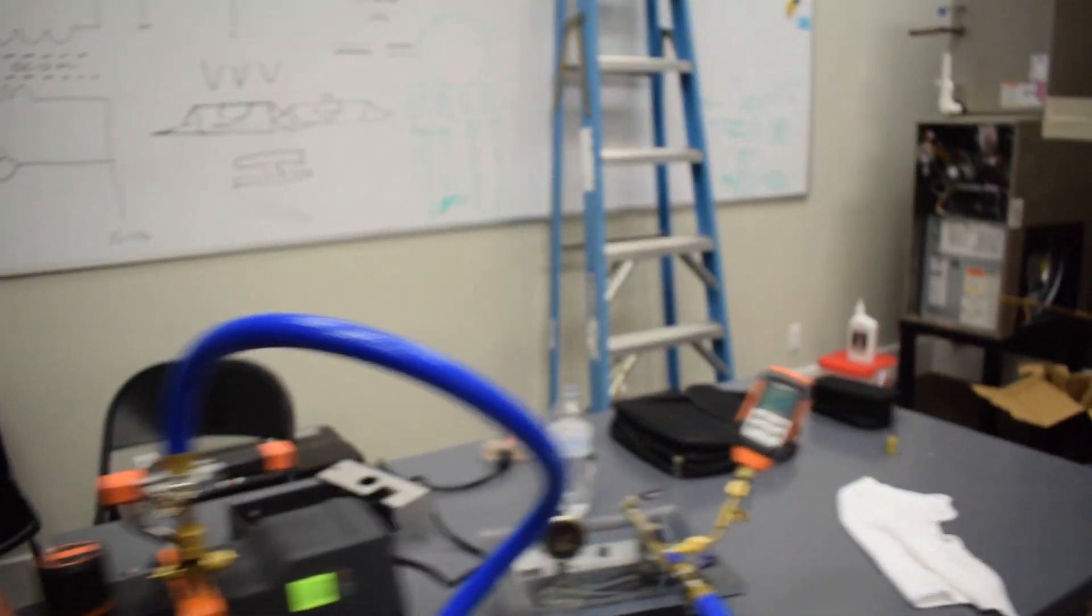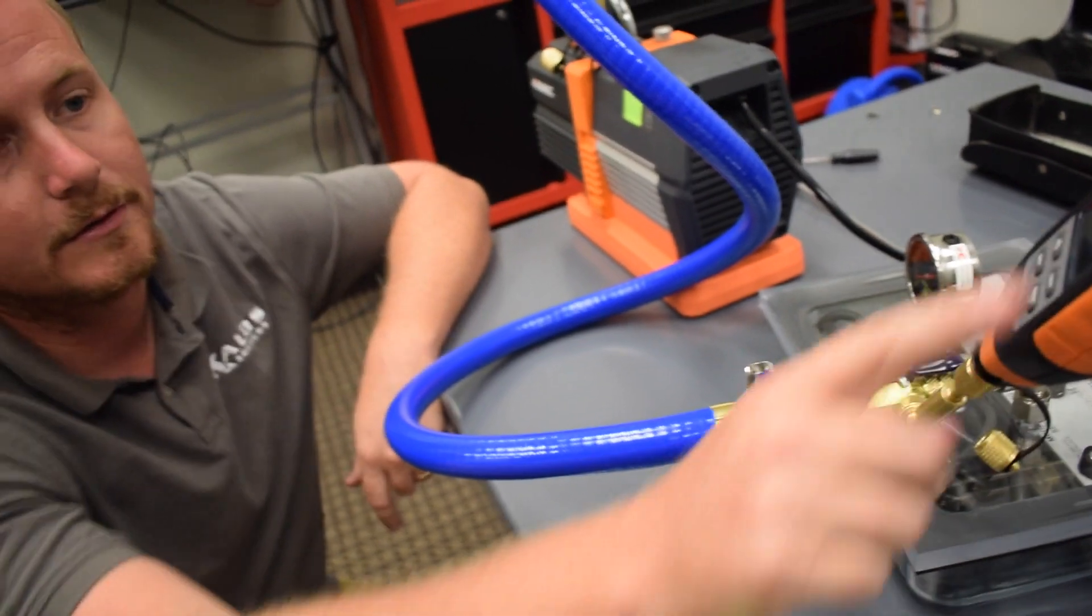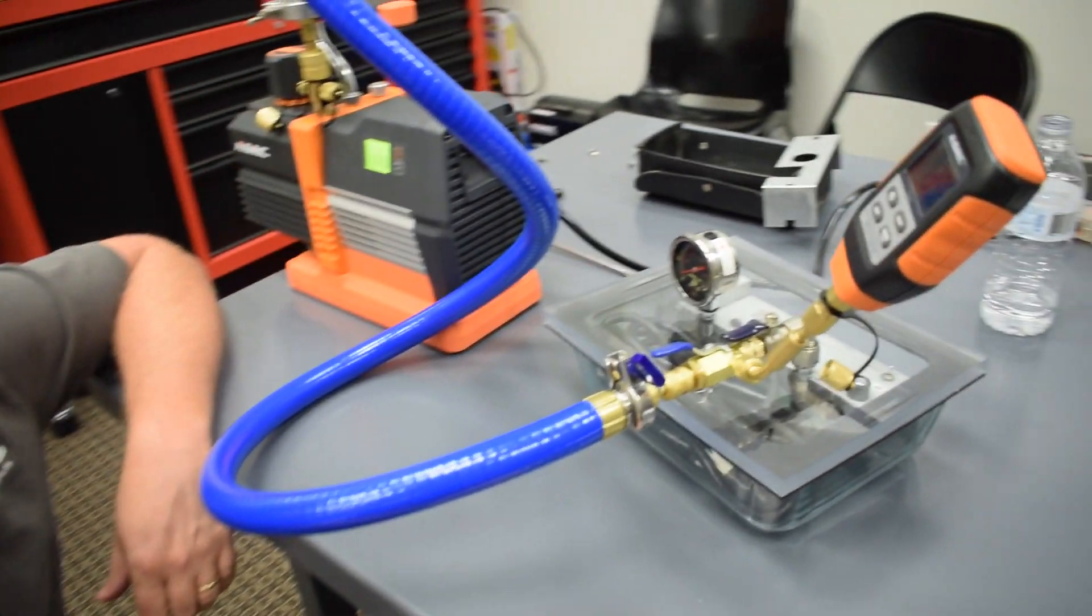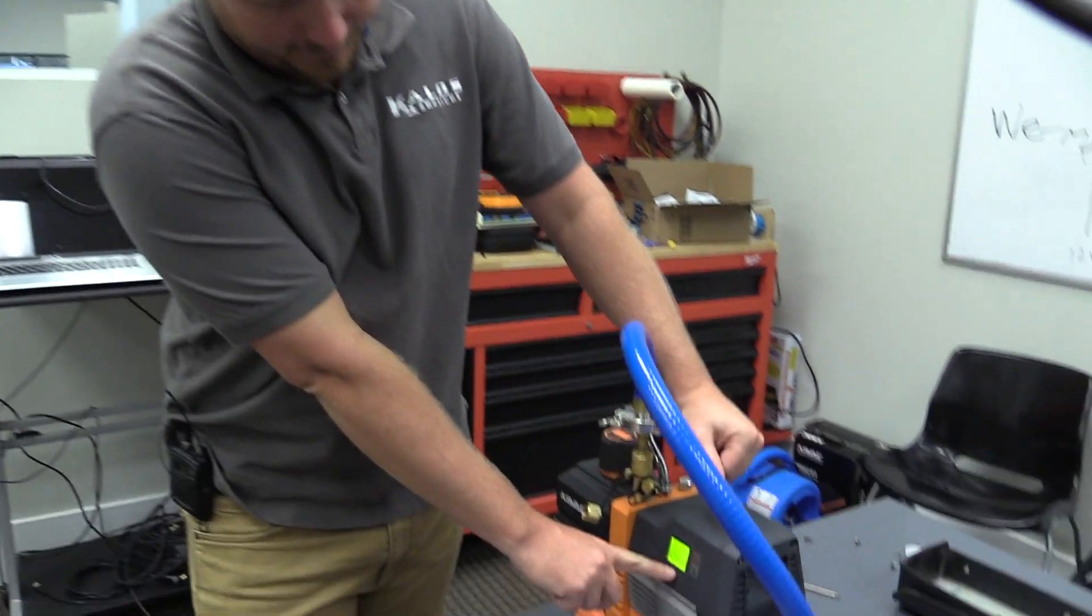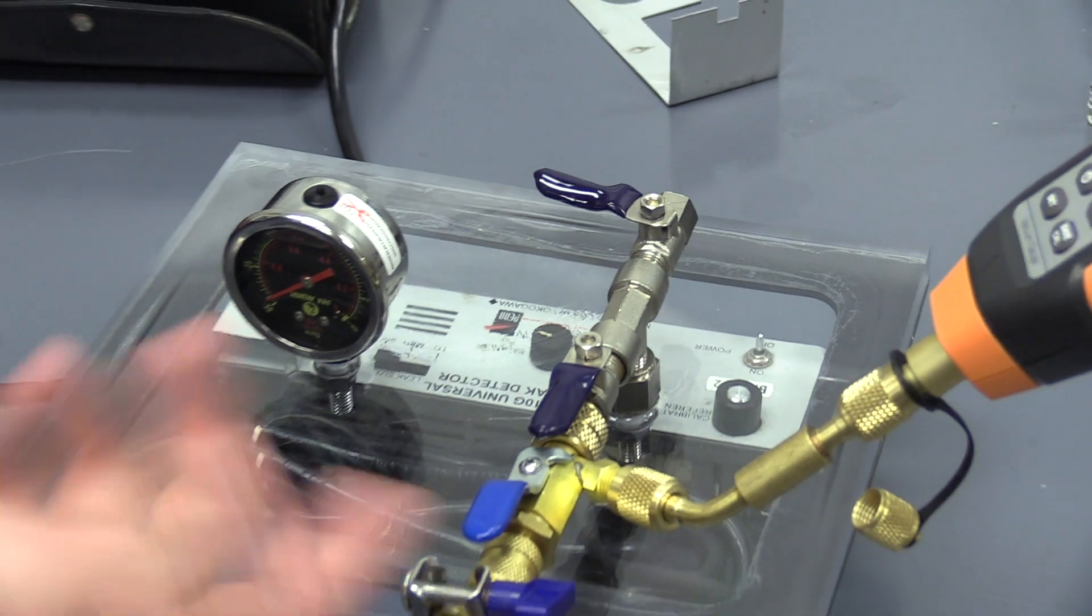All right, so now we're just gonna run this until this thing gets down to 500 microns or so, and then we're gonna test the vacuum pump again. All right, so you can see we are at 177 microns on the pump. We're at 452 microns here. I know that this assembly is somewhat leaky.